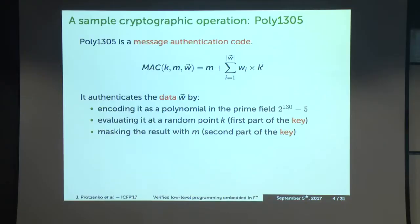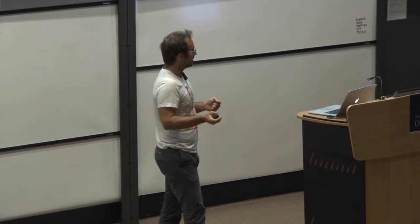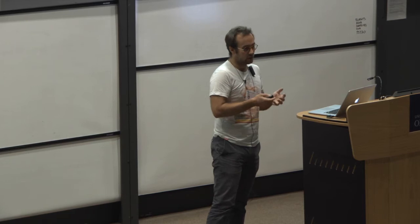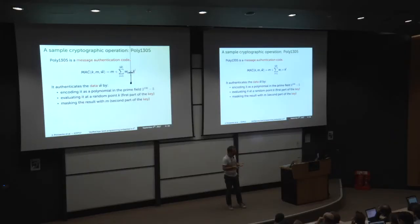Poly1305 is a MAC — a message authentication code. The intent is that you have a key in two parts, K and M, that allows you to compute a MAC of a message. The key is used once and the MAC is cryptographically secure because an attacker cannot forge another message with the same MAC — the probability of doing so is negligible.